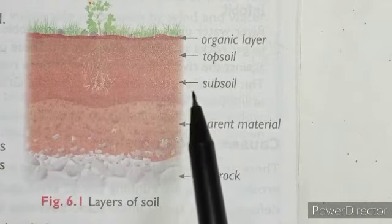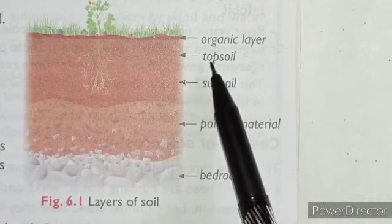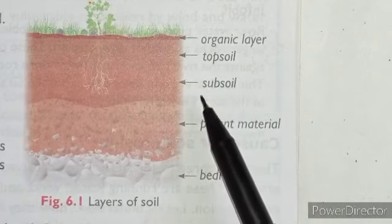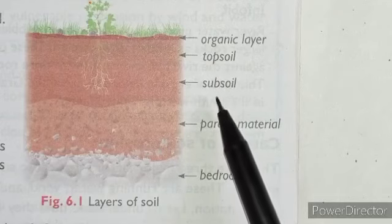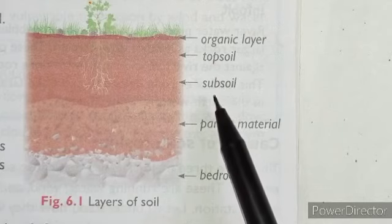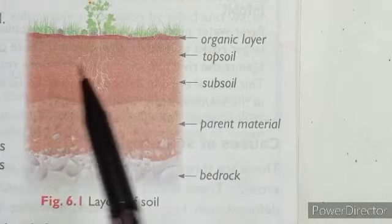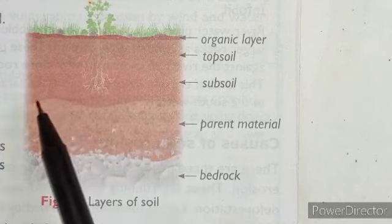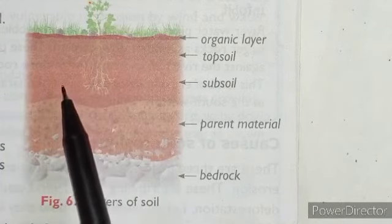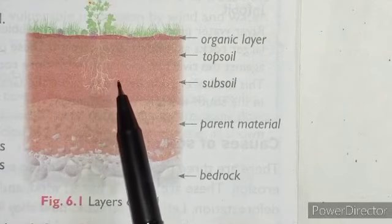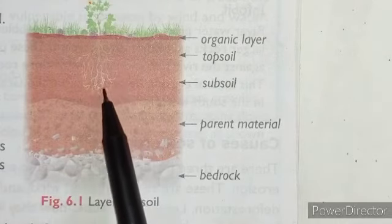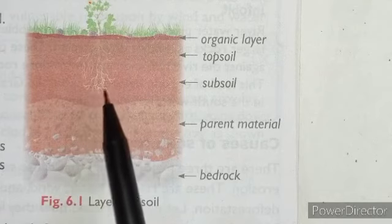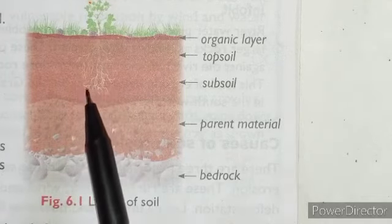The next layer below the topsoil is called subsoil. Subsoil contains mostly minerals and only a small amount of humus. Only the deepest plant roots reach down to the level of the subsoil.